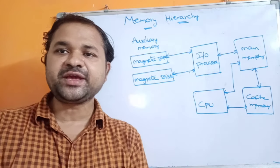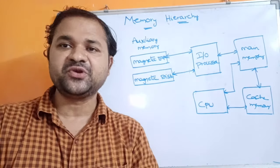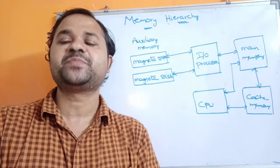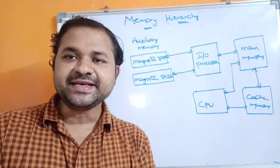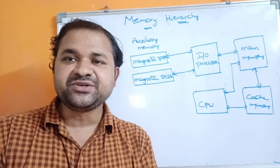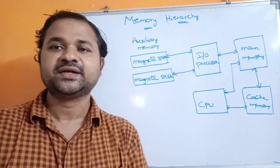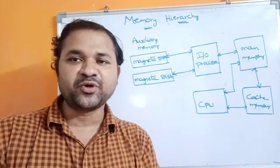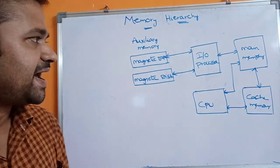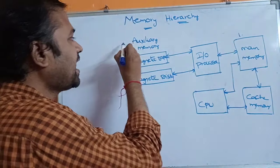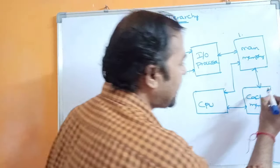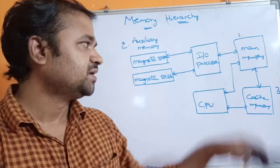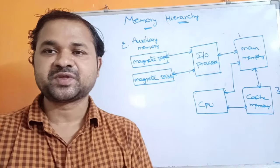Now let's see about memory hierarchy in a computer system. Memory is an essential part in any computer — memory is just like a brain, useful for storing information. Mainly there are several types of memories in the computer, like main memory, auxiliary memory, and cache memory. Let us see about all these memories one by one.